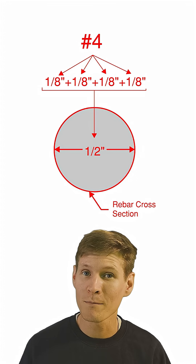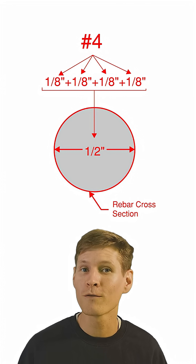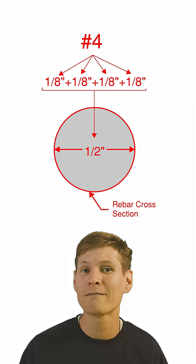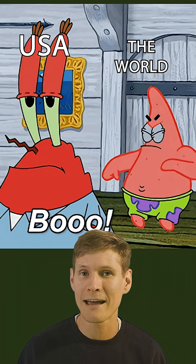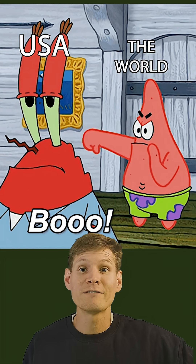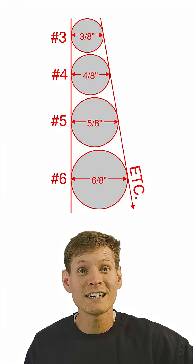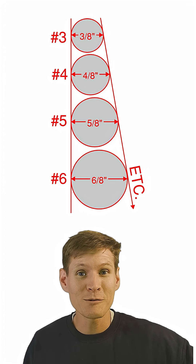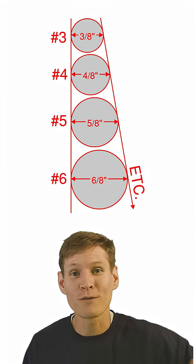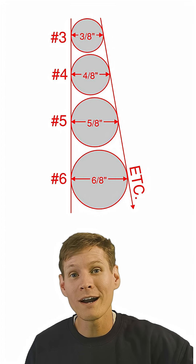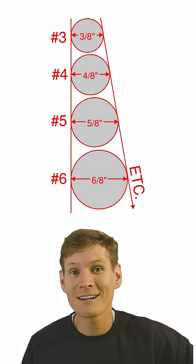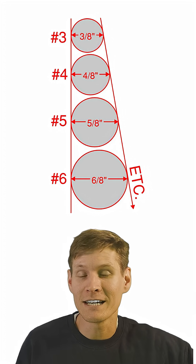So a number 4 bar is equivalent to 4 over 8, which equals 1/2 of an inch in diameter. A number 5 is 5/8 of an inch in diameter. Number 8 is an easy one — 8 over 8, equaling 1 inch in total diameter. And then, of course, a number 9 bar is 9/8 of an inch in diameter.